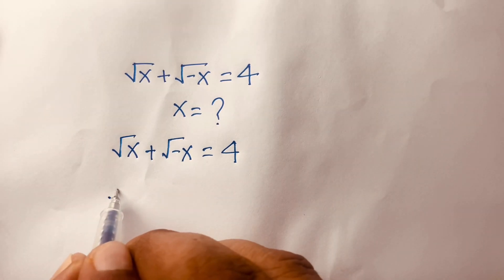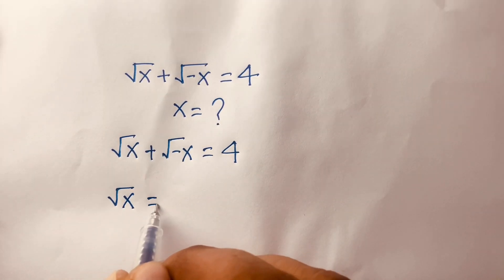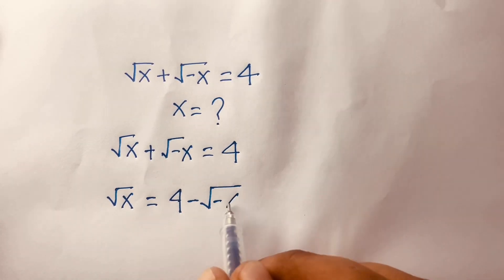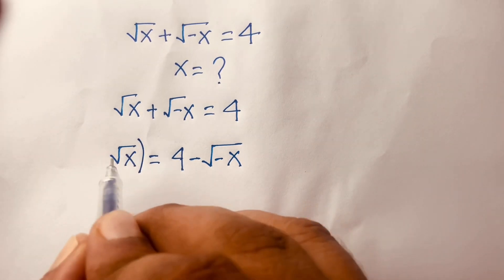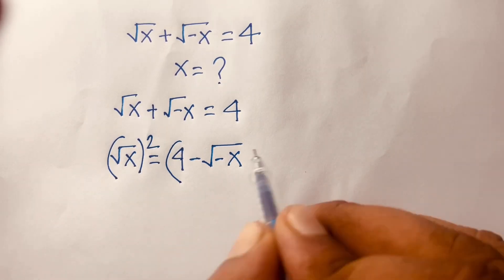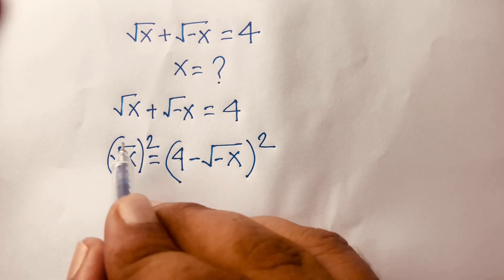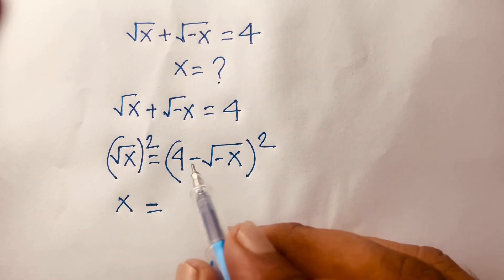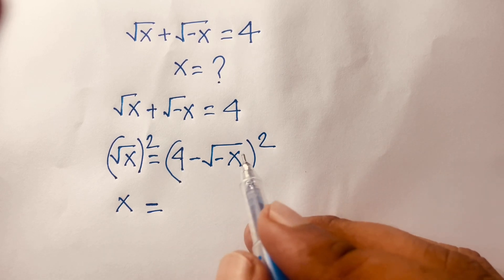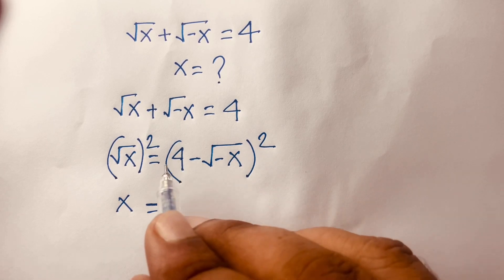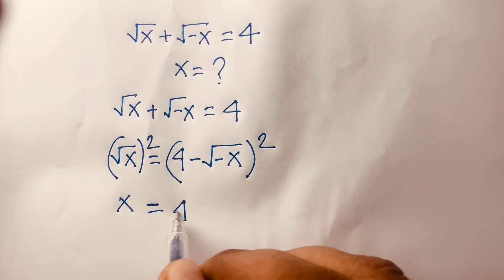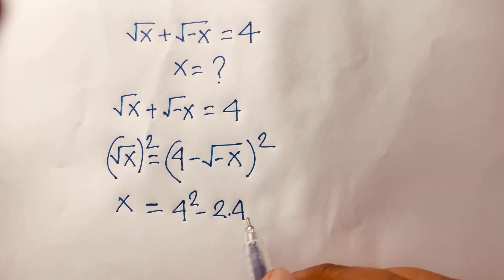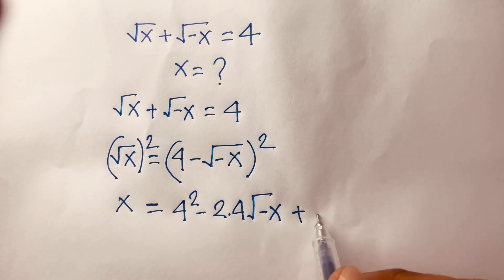First, I rearrange the equation so that square root of x is equal to 4 minus square root of minus x. Then I square both sides. Using the identity (a - b)² = a² - 2ab + b², I expand the right side as 4² minus 2 times 4 times square root of minus x, plus square root of minus x whole square.